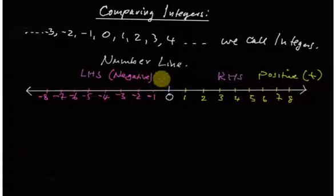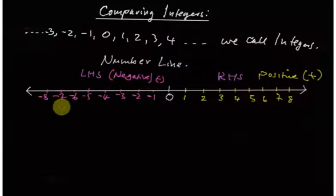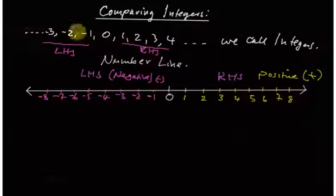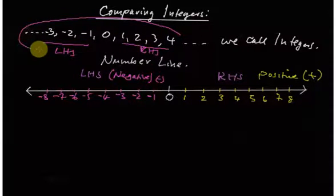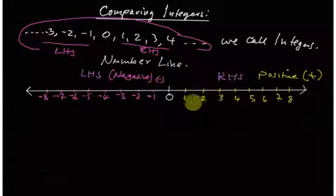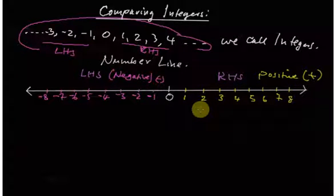Negative five, negative six, negative seven, negative eight, and so on. So we have positive numbers on the right and negative numbers on the left. The integers on the left-hand side are negative and those on the right-hand side are positive. We've just placed the integers we know onto the number line.